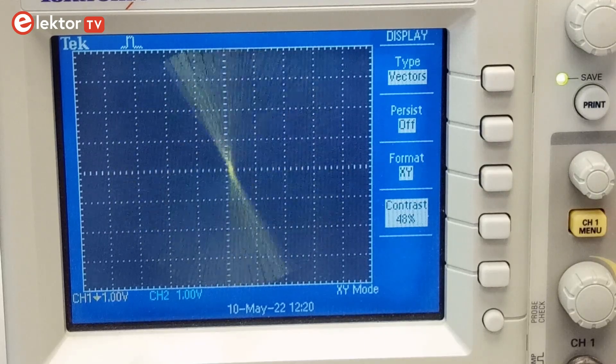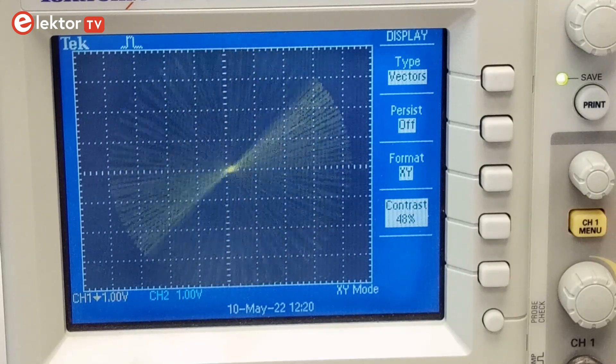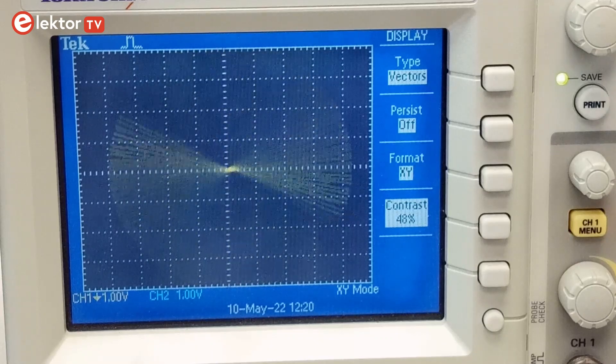With the oscilloscope in XY mode, you can clearly see the rotation. The resolution is very good, and even infinite for an ideal device.